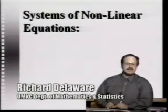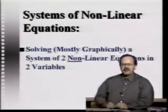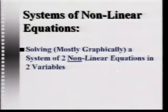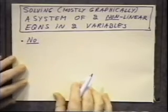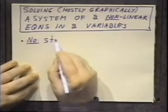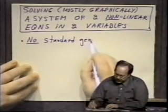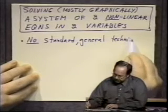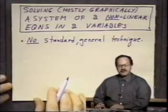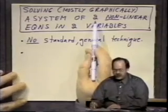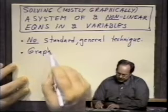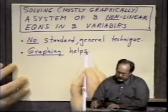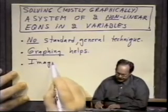As a final note, almost an addendum to this unit, we're going to talk about solving — mostly graphically — a system of two nonlinear equations in two variables. I'll do two examples to show you what's going on. The important fact is that unlike linear systems, there's no standard or general technique here. They're all different, which makes it generally a hard problem. We'll limit ourselves to two nonlinear equations in two variables so we can graph them — and that's the key. Graphing helps, and since we have graphing devices, these become more reasonable to solve.